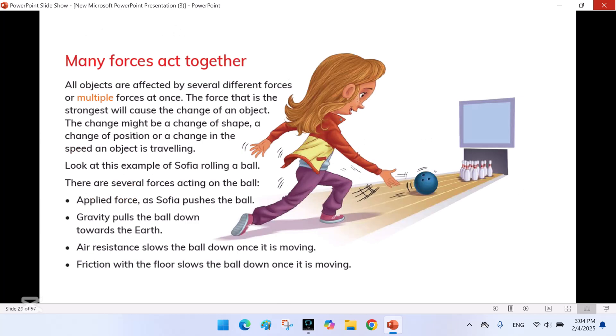Many forces act together. All objects are affected by several different forces or multiple forces at once. The force that is the strongest will cause the change of an object. The change might be a change of a shape, a change of position or a change in the speed an object is traveling. Look at this example of Sophia rolling a ball. There are several forces acting on the ball. Applied force as Sophia pushes the ball. Gravity pulls the ball down towards the earth. Air resistance slows the ball down once it is moving. Friction with the floor slows the ball down once it is moving.